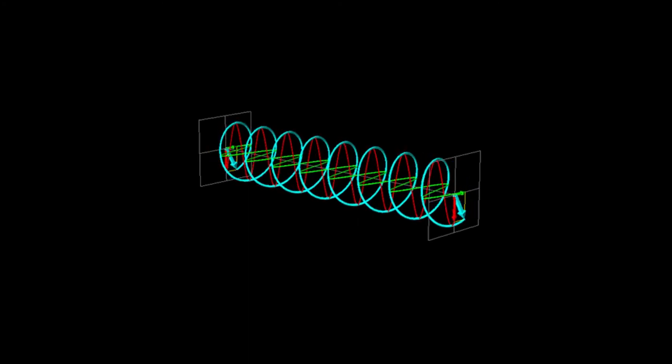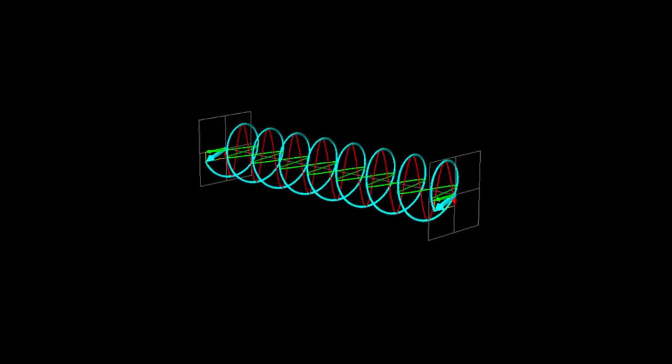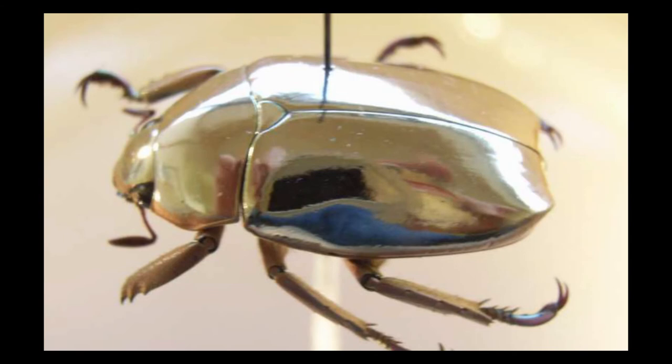Helicoidal microstructures in the scarab beetle's cuticle have different indices of refraction in two axes. This directional difference in index of refraction delays one axis of the input light more than the other, which, when reflected back out of the cuticle, produces a rare circularly polarized light.